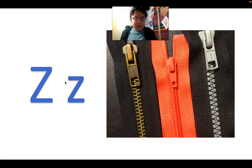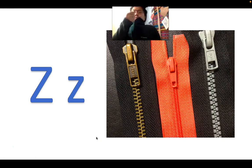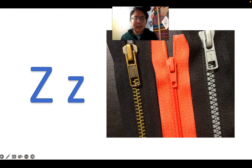Last one. This is Z. Z says z, like zipper, like zipper. Z says z, like zipper, z, zipper. Okay? So those are our letters of the alphabet. Good job.